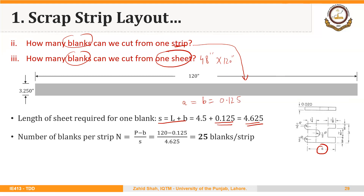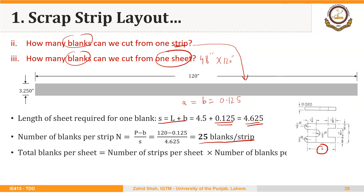The number of blanks per strip equals the starting length of the strip minus B, divided by the length required to make one blank. So (120 − 0.125) ÷ 4.625 = 25 blanks per strip. The total blanks per sheet equals the number of strips per sheet multiplied by the number of blanks per strip, which is 25 × 14 = 350 blanks.